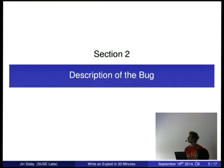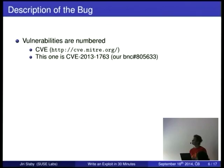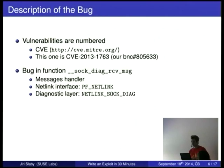What was the bug we chose? First let me note that all such vulnerabilities are numbered. They are numbered by an organization Mitre and all such bugs receive a CVE number. This one was CVE-2013-1763. We also had a bug at bugzilla at novell.com with the number you can see on the slides.